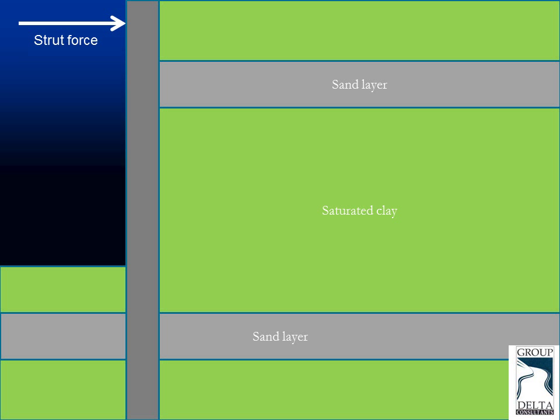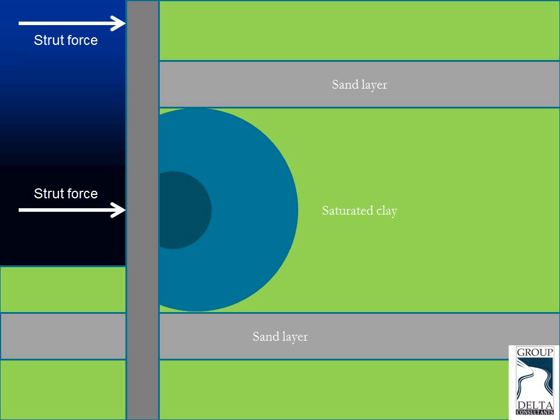If you deepen the excavation and install a strut which you pre-stress, when you're pre-stressing the strut, what you're doing is pushing into the saturated clay and compressing mainly the water that is in the pores of the saturated clay. This is equivalent to trying to compress a beverage can without opening it first — all the load goes into the liquid that is inside the can.